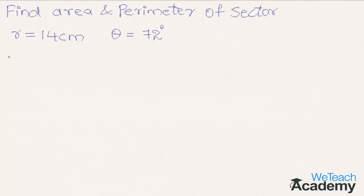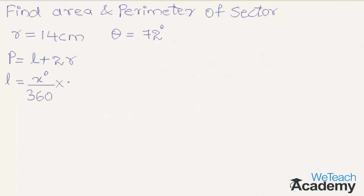We already know that the perimeter of a sector is given by the formula l plus 2r, where l is the length of the arc. So first let us find the value of l. The length of an arc is given by the formula x degrees divided by 360 degrees, into 2 pi r.